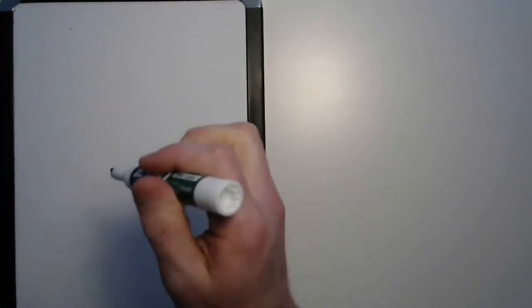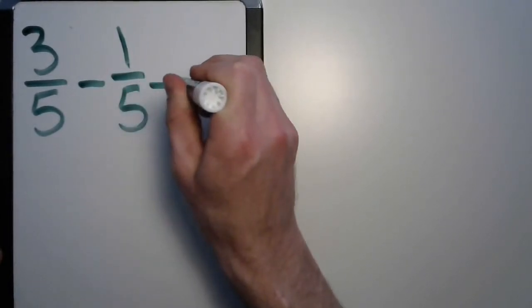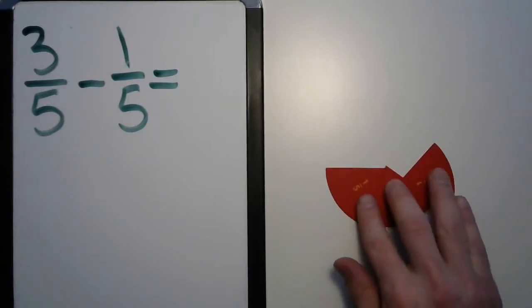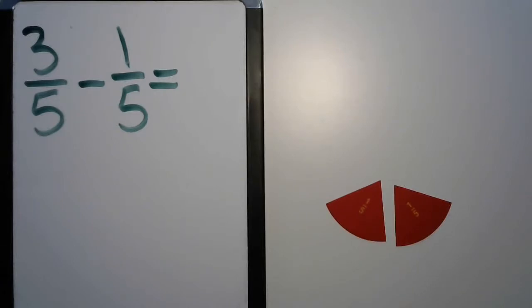For example, what if we have a problem like three-fifths minus one-fifth. Let's bring those three-fifths out here. Here they are. And take away one-fifth. And what's left? Two-fifths.